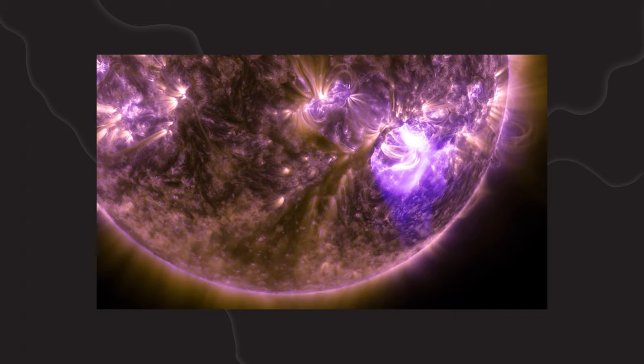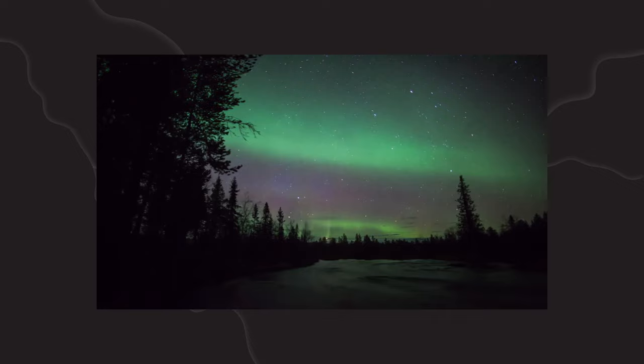On Earth, lightning and auroras are naturally occurring plasmas. Man-made plasmas are also common in neon or fluorescent lights or electrical arcs, like in welding.